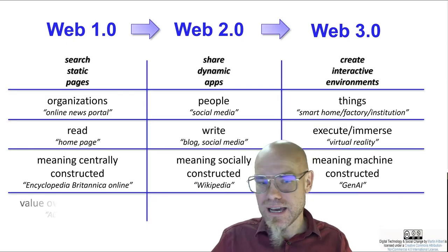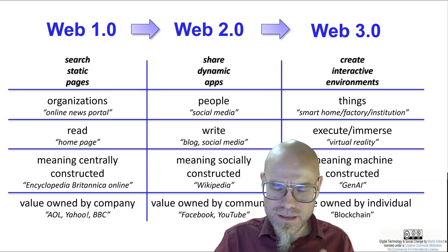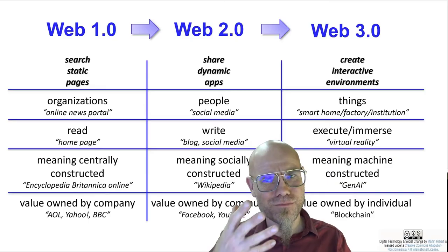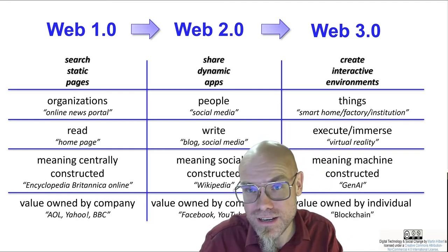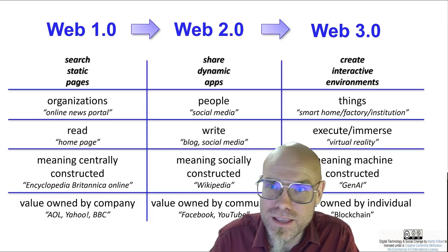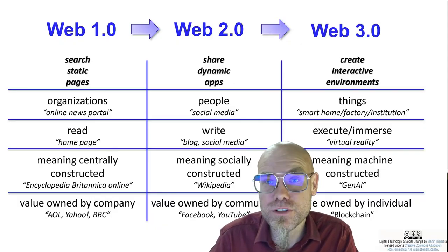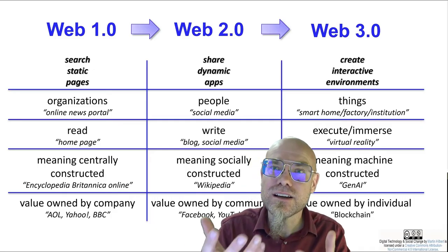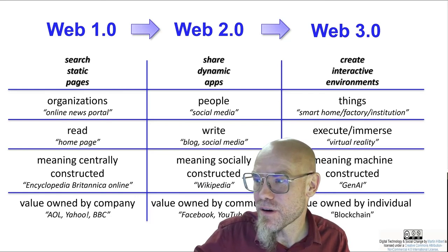The last distinction is value. In web 1.0 value was traditionally industrial, owned by companies like BBC, Yahoo, and AOL. In web 2.0, it was supposedly owned by the community — the Facebooks and YouTubes provided the platform, but the community created the value, even if they didn't own it. In web 3.0 the battle is still on — either machines own it through generative AI, or individuals own it through blockchain technology, which theoretically allows individuals to take ownership of their own data.